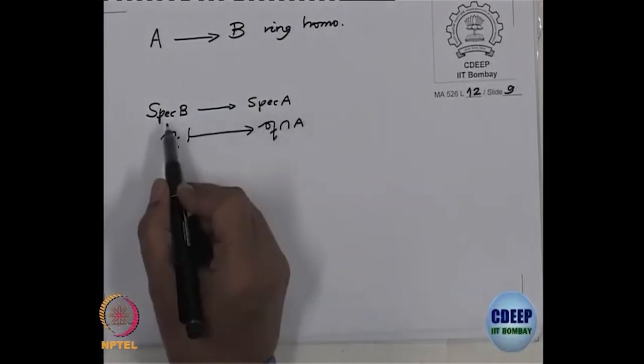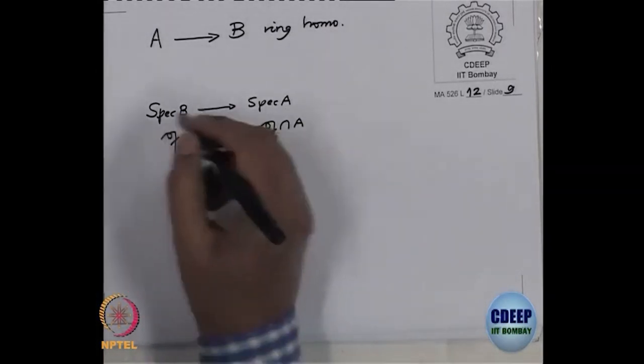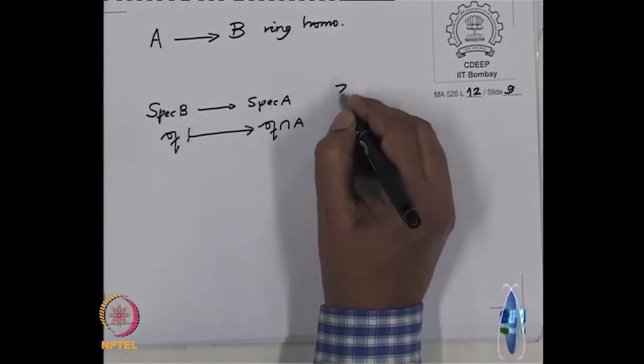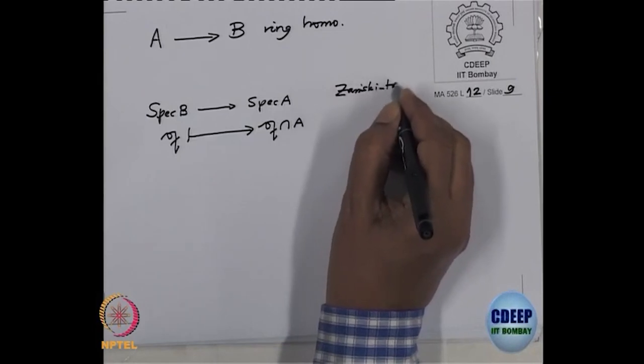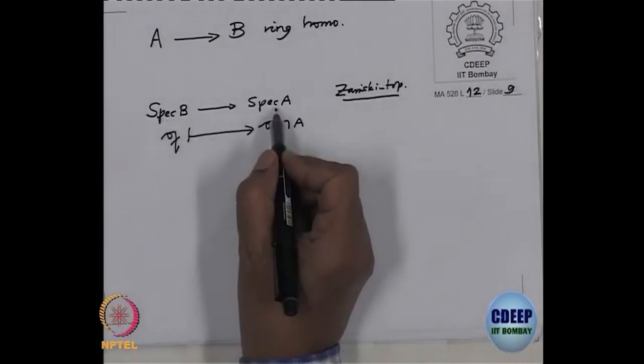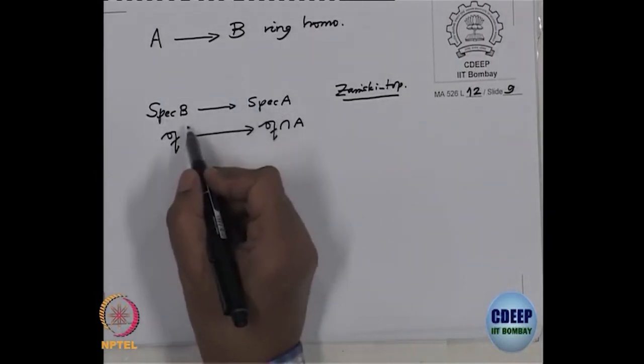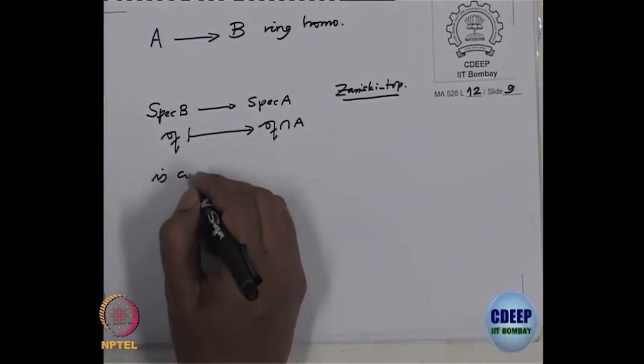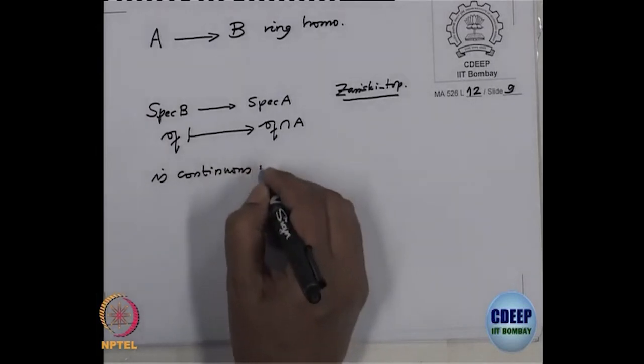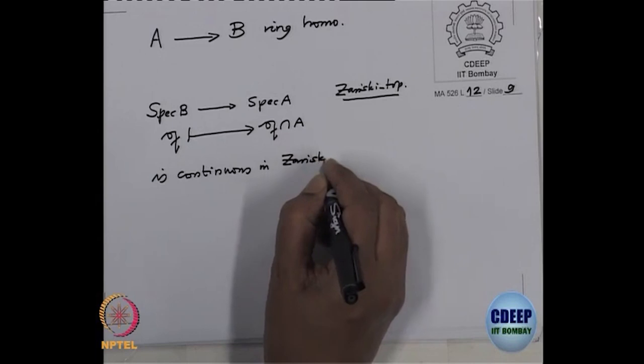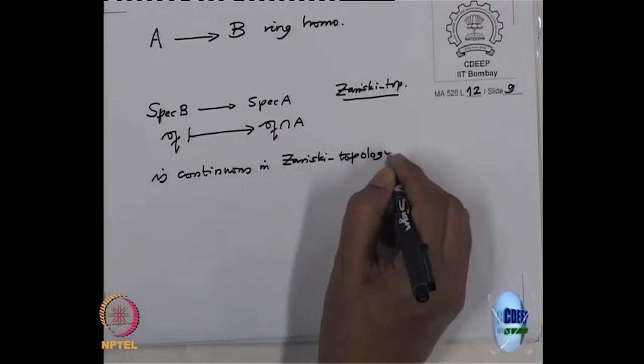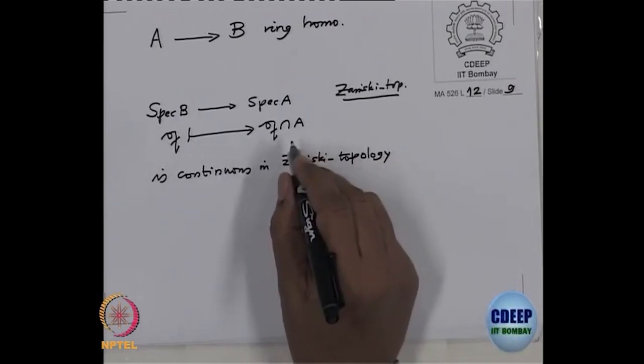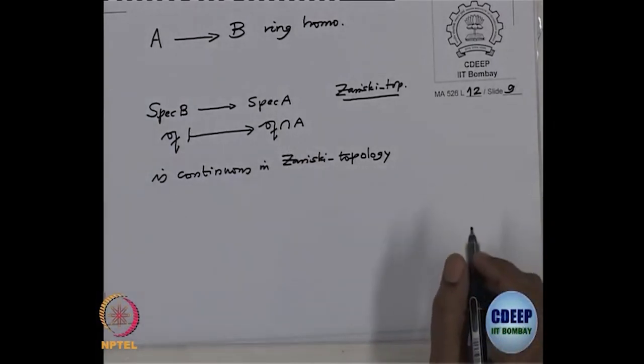And also I guess we know what is the topology on spectrum. So consider this now as topological spaces with Zariski topologies. This is a topological space, this is a topological space. Then I want to check that this map is actually continuous. So then this map is continuous in Zariski topology. Do you already know that or shall I check it? So how do you check some map is continuous? Inverse image of an open set is open or inverse image of a closed set is closed.